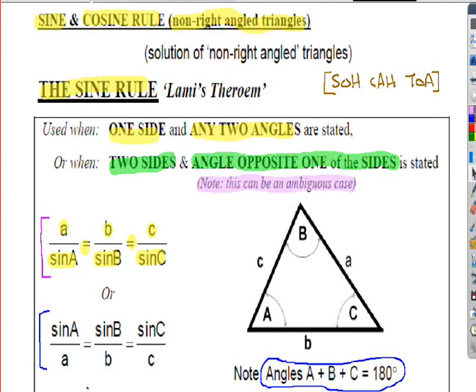Just going to recap last week's work for five minutes or so. Last week we looked at solving non-right-angled triangles — that was the key focus. To solve right-angled triangles we use the SOHCAHTOA mnemonic, but those definitions of sine, opposite over hypotenuse and so on do not work for non-right-angled triangles, and that's why we need different techniques.